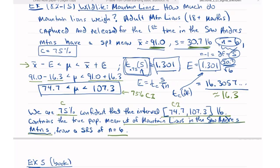And I added pounds, the units, contains the true population mean of the weight of mountain lions, and specifically in the San Andreas mountains. And this is calculated from a simple random sample of n equals six mountain lions.